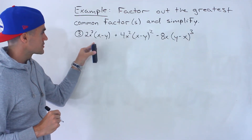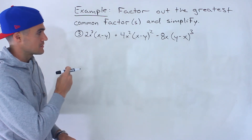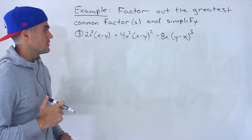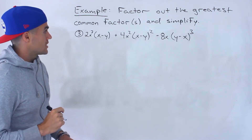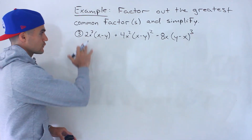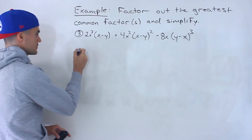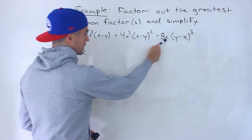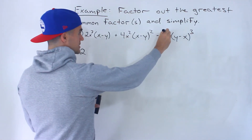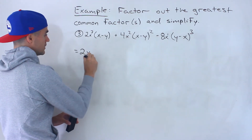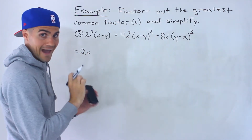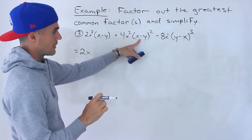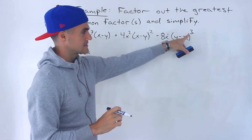Moving on to number 3, we've got 2x³(x−y) + 4x²(x−y)² − 8x(y−x)³. With the constants in front, we could take out a 2. Then we have x³, x², and x, which are common factors — take out the lowest exponent, x¹. And then notice the brackets: we have (x−y), (x−y)², and (y−x)³. That last bracket is almost the same but with signs switched.